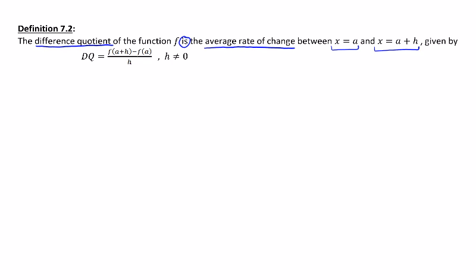Since the difference quotient is just an average rate of change, I should be able to do an AROC calculation where x₁ is equal to a and x₂ is equal to a plus h.